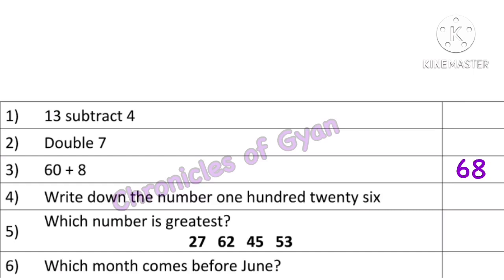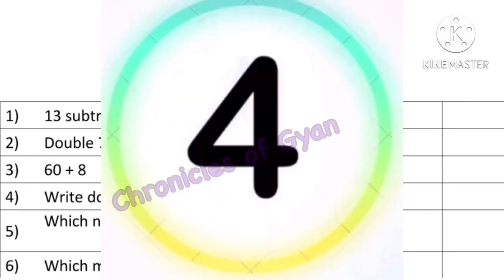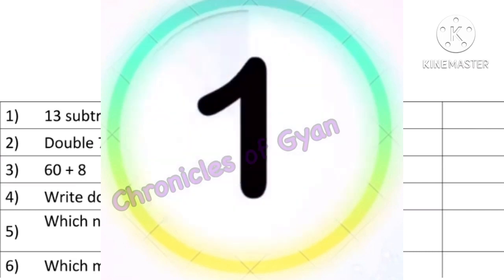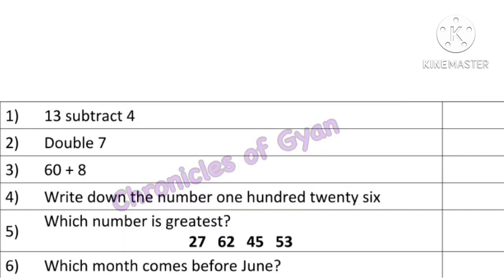Question 4: Write down the number 126. The number 126 — so 100s, 10s and 1s. What is in the unit place? 1, 2, 6 — 6 is the answer.